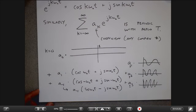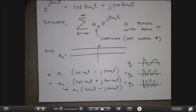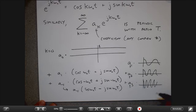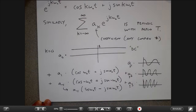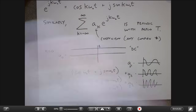As I increase k, I get the coefficient amount for things that wiggle more and more. For most signals we care about, as k gets bigger the coefficients probably get smaller and smaller, because a real-world signal probably doesn't wiggle extremely fast. The low-k terms are called low-frequency sinusoids and as k increases we get higher-frequency sinusoids. The k=0 term, the constant, is called DC.